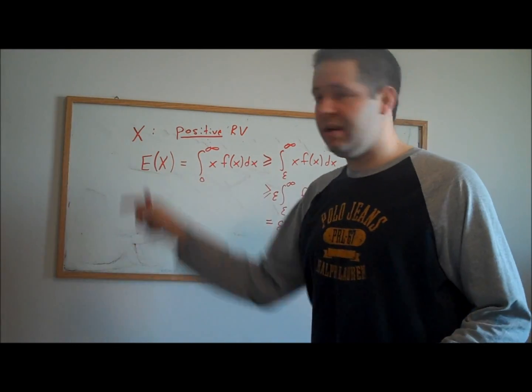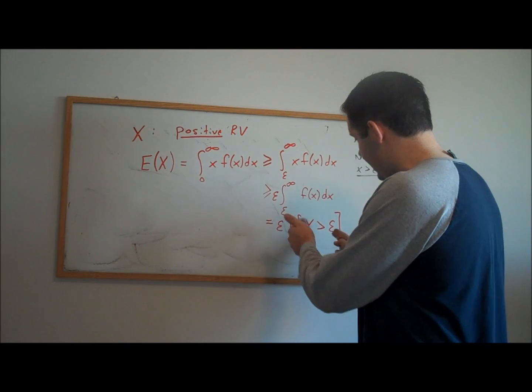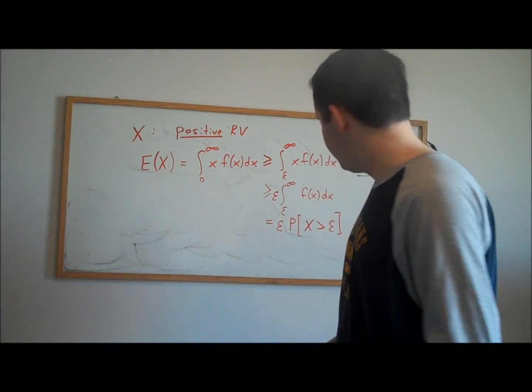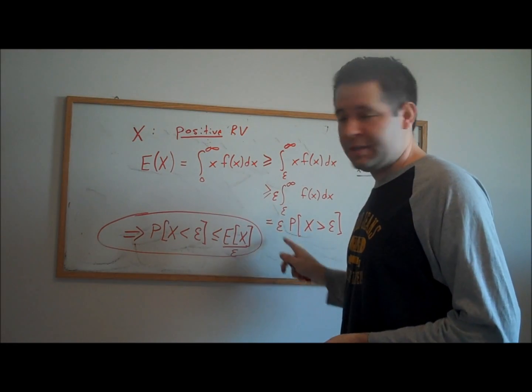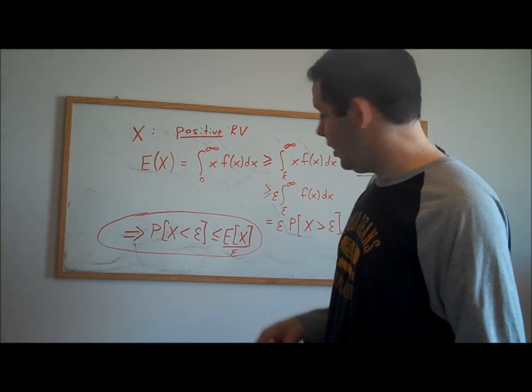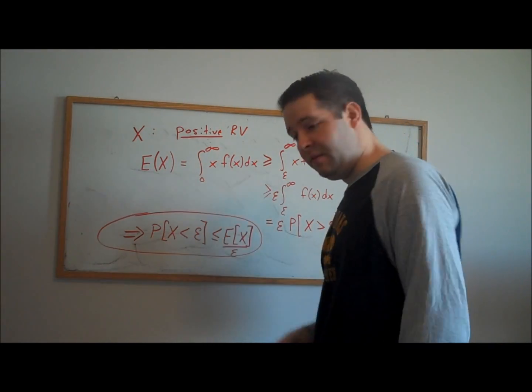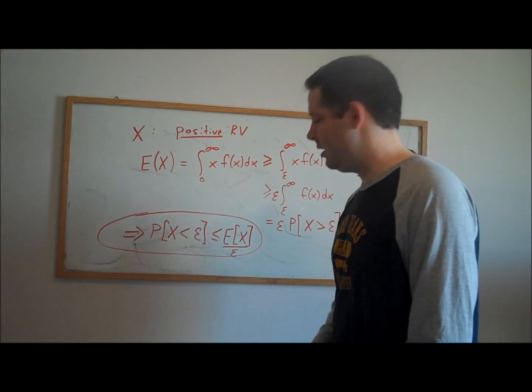Now what we can do is string these equalities and inequalities together and get what is known as the Chebyshev inequality. That is, we just divide by this epsilon and then notice that the inequality makes the expectation divided by epsilon bigger than this probability statement here.